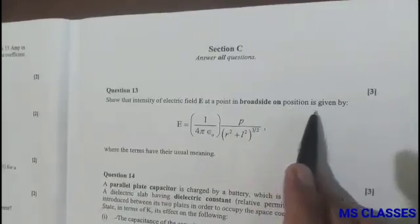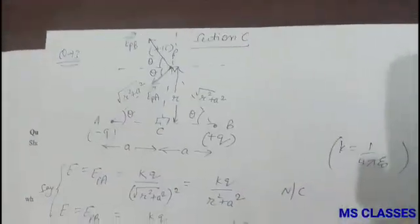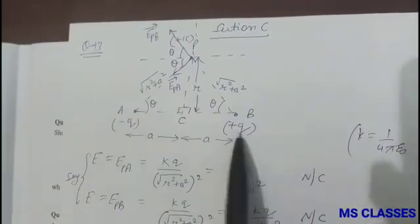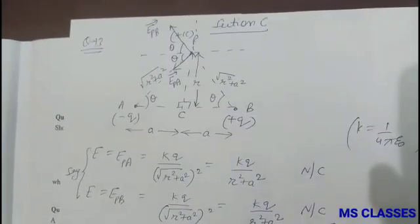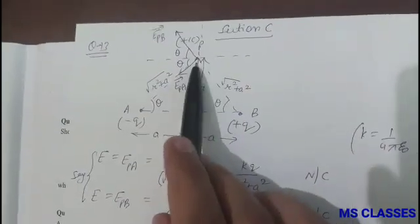So this is a diagram where we have taken minus Q and plus Q which is separated by 2A. Later we will replace A with L as given, and this is the point P where we have to find, which is lying on the broadside position where plus one coulomb charge is kept.